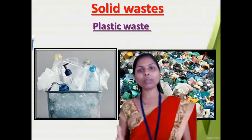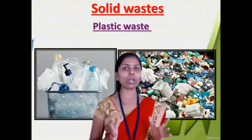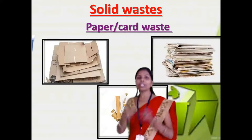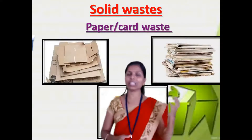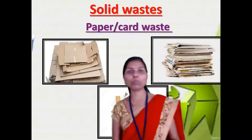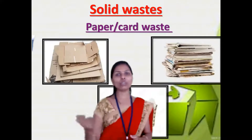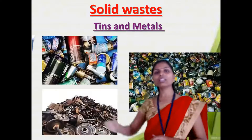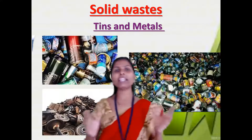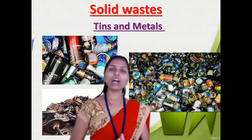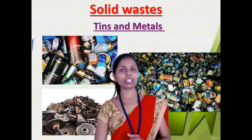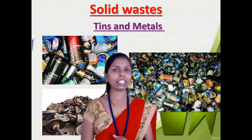At home we are throwing many different types of plastic bottles and plastic carry bags. We are also using different types of paper — maybe newspapers or different types of books and notebooks. After using these we throw away that paper. The third type is tins and metals. After using various products at home, we throw different types of metals or tins, and these come under the category of solid waste.